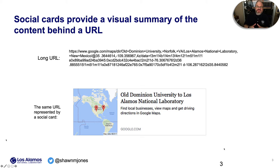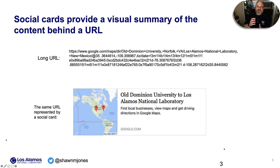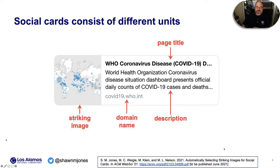In this case, we know that this URL will take us to a document providing directions from Old Dominion University to Los Alamos National Laboratory, because that's what the card helps us understand. Social cards consist of different units, like a page title, a description, a striking image, and a domain name.